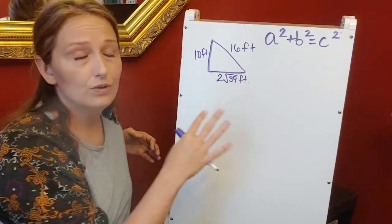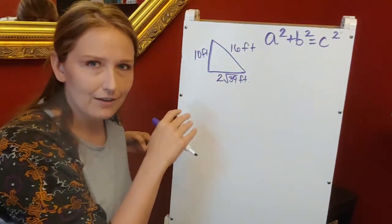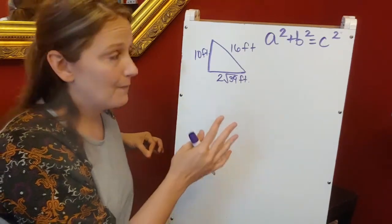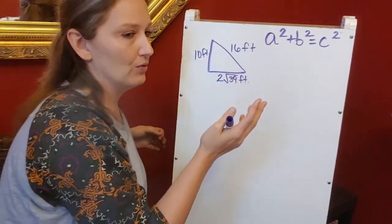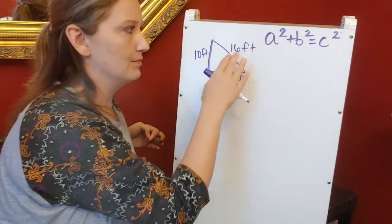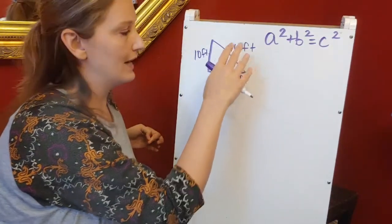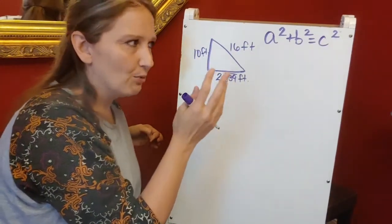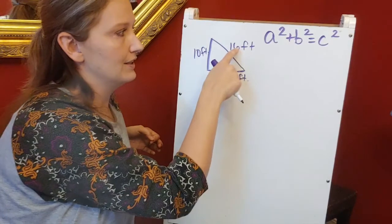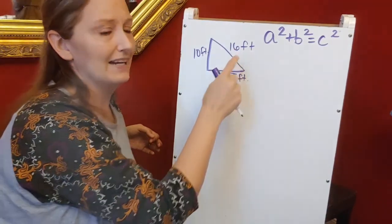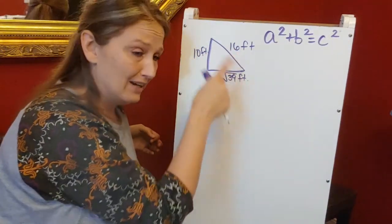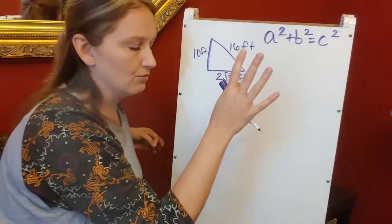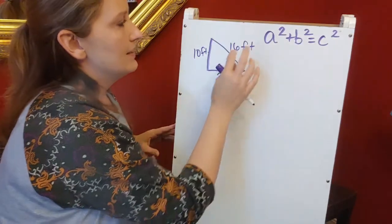We're going to plug these numbers into the Pythagorean theorem and check how those numbers work out. First, we need to figure out which is our longest side. 16 feet is my longest side. 2√39 comes out to about 12.5, so it's not longer. Don't ever trust your diagram, trust the numbers. In this one, 16 feet